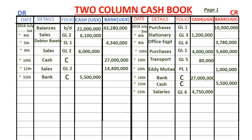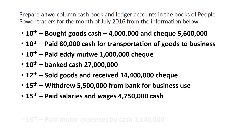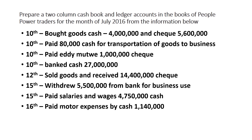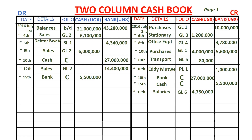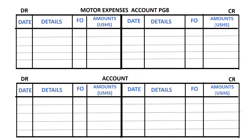Finally, on 16th, paid motor vehicle expenses by cash $1,140,000. Cash reduced, so we credit the cash account with $1,140,000. We complete the double entry by putting $1,140,000 on the debit side of the motor expenses account found on page eight of the general ledger. Cash is on cash book page one, and we put GL8 in the folio column.